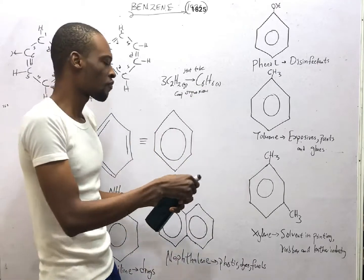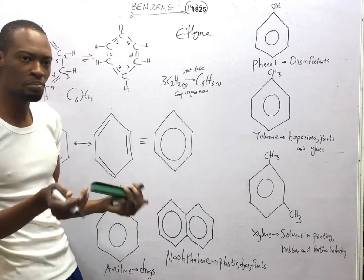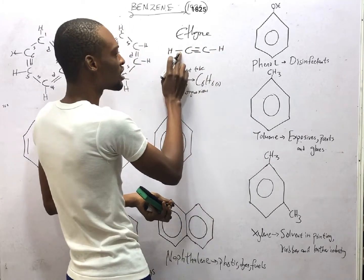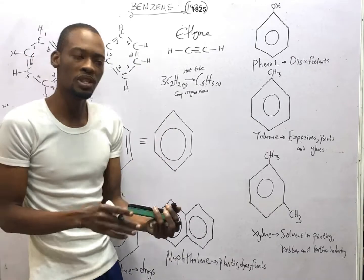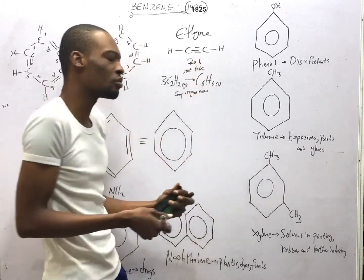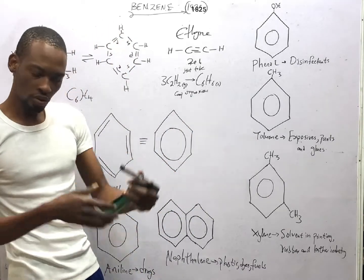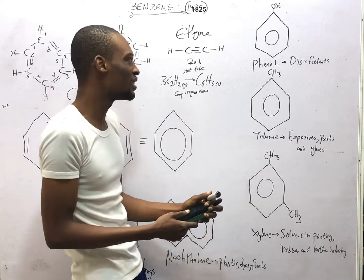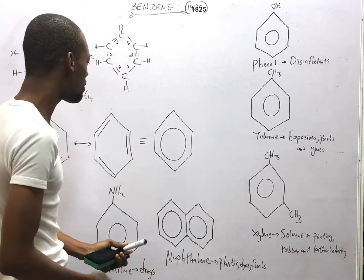Now what is ethyne? Ethyne is an aliphatic hydrocarbon with a triple carbon-to-carbon bond — two carbons with a triple bond and one hydrogen on each carbon, confirming the tetravalency of carbon. Ethyne is C2H2. When you pass ethyne gas through a red-hot tube containing a complex organometallic catalyst, benzene is formed.